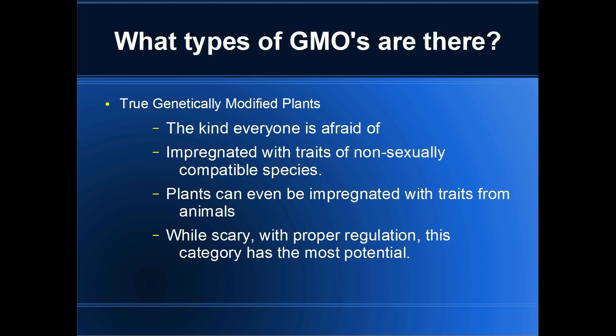The third type are the scary ones — true GMOs. These are plants that have been impregnated with traits of species that are not sexually compatible; they can even come from different kingdoms. For example, there have been cases of tomatoes impregnated with a fish gene that makes them survive cold temperatures longer.